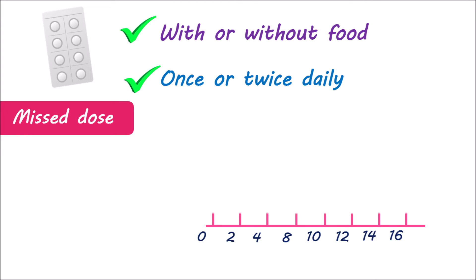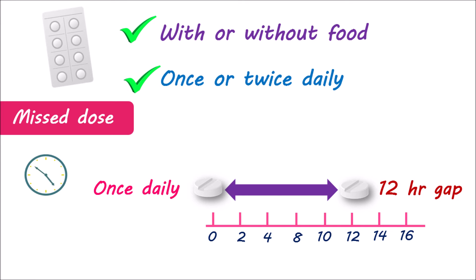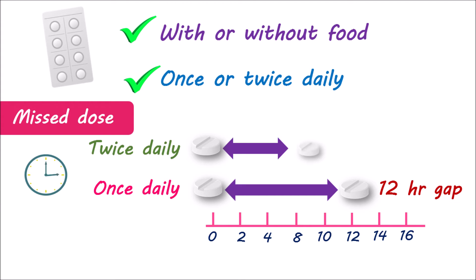In the event of a missed dose, it can be taken as early as possible, but you should maintain a minimum gap between two consecutive doses. If you are taking risperidone once daily, you should not take a missed dose less than 12 hours before the next dose. Similarly, if you take risperidone two times a day, any missed dose can be taken by maintaining at least an 8-hour gap before the next dose. The dose of risperidone depends on the purpose of its use and patient conditions such as age and any coexisting conditions.